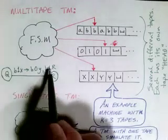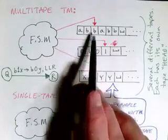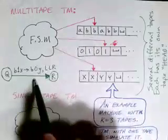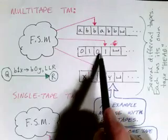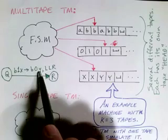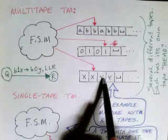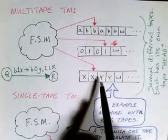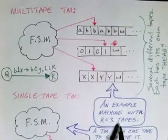What are we going to do? We're going to overwrite the B with a B — in other words, we're not going to modify it — and we're going to move left, so this head will move left. We're going to overwrite the 1 with a 0, and this head will also move left. And finally, we're going to overwrite the X with a Y, and this head is going to move right. So we'll overwrite that X with a Y and move to the right. It's a very similar kind of definition for Turing machines, but we now have three tapes in this example.